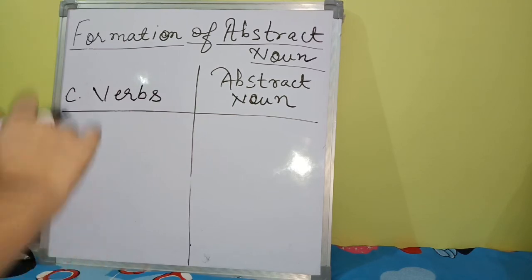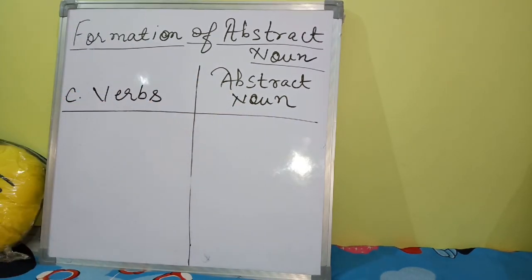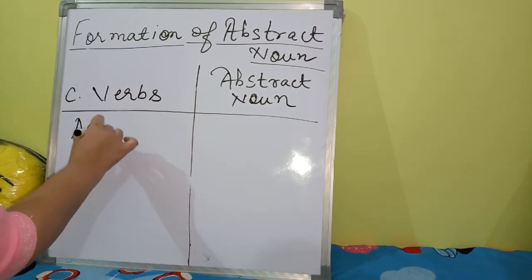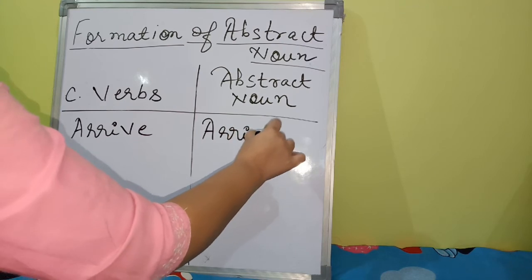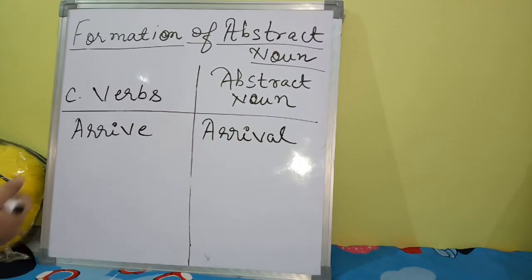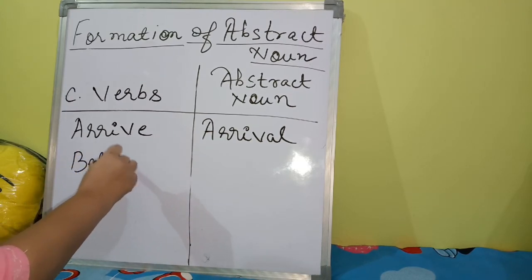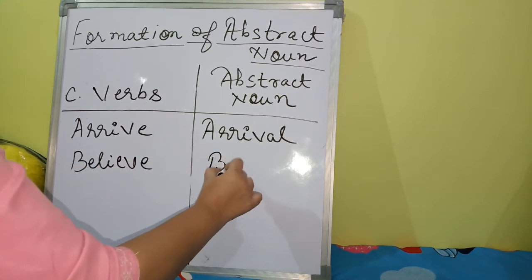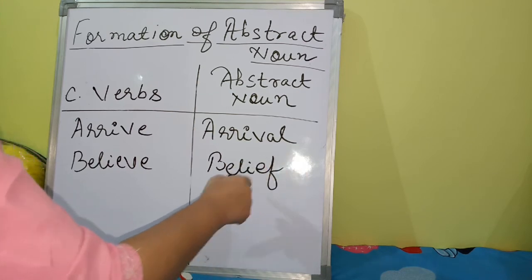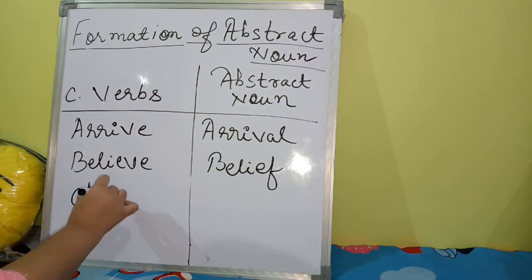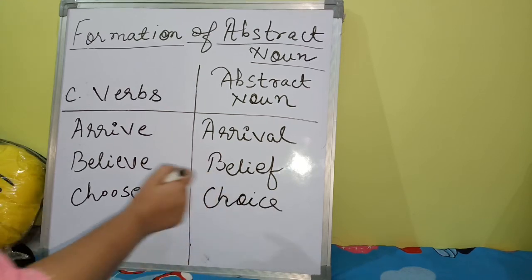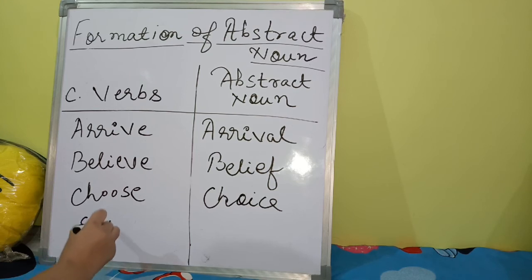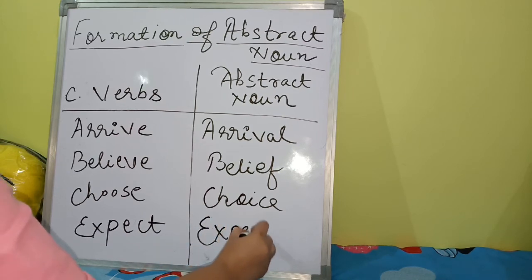Now we will see some words — verbs — from which we need to form abstract nouns. For example: 'arrive' becomes 'arrival,' 'believe' becomes 'belief,' 'choose' becomes 'choice,' and 'expect' becomes 'expectation.'